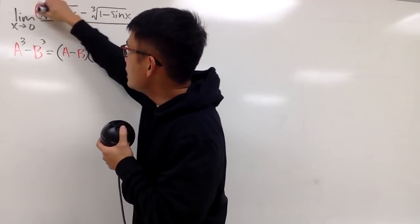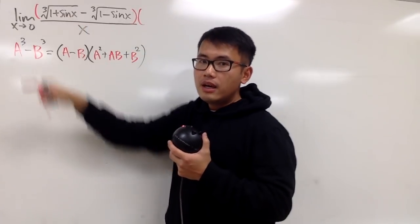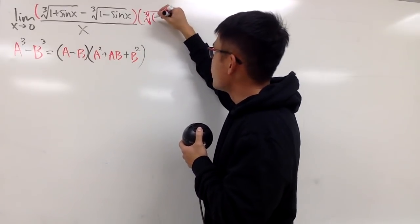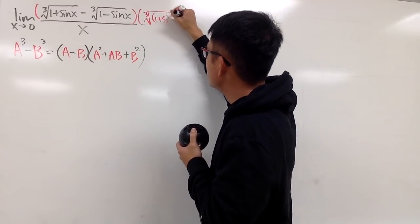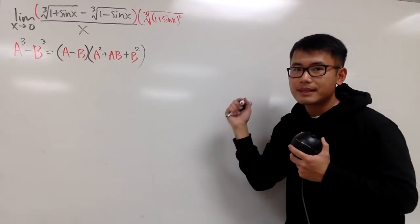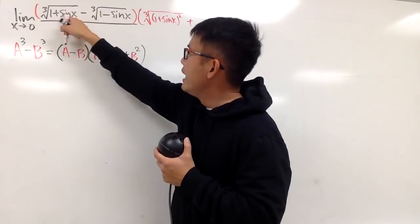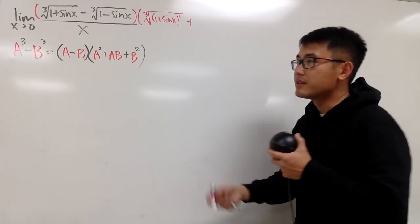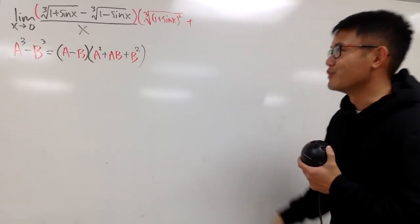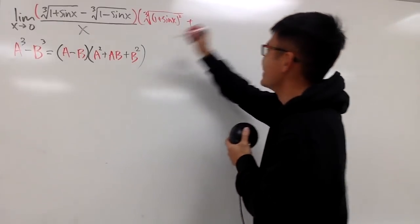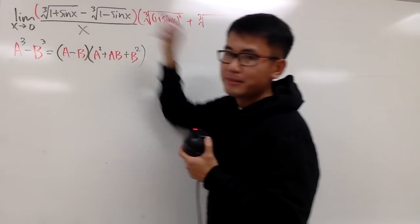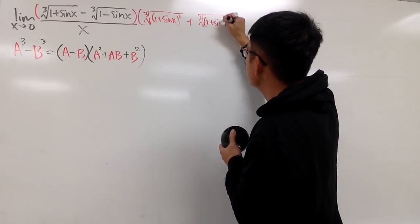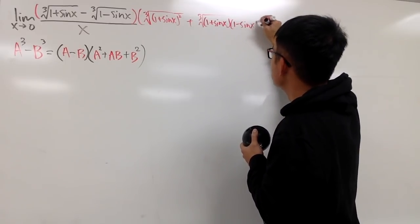So now, that's what we are going to do. Let's take the top, and I will multiply this by, this is my a, I will have to have a^2, so that's equal to the cube root of (1 + sin x)^2. And then, I will have to add ab, and because both of them are inside the cube root, so I can just put it inside, multiply them together.